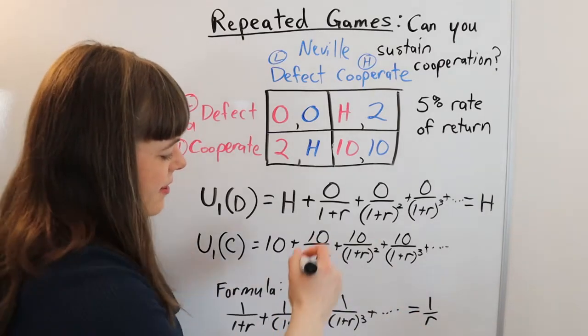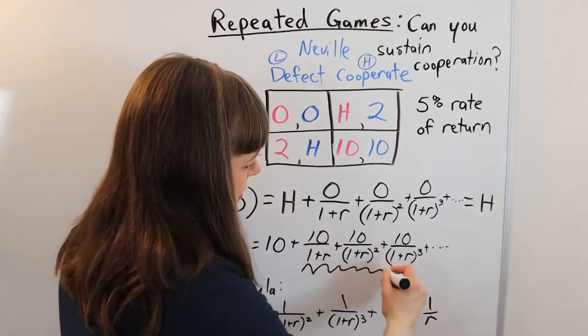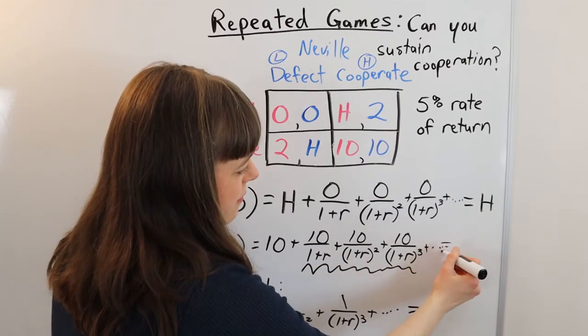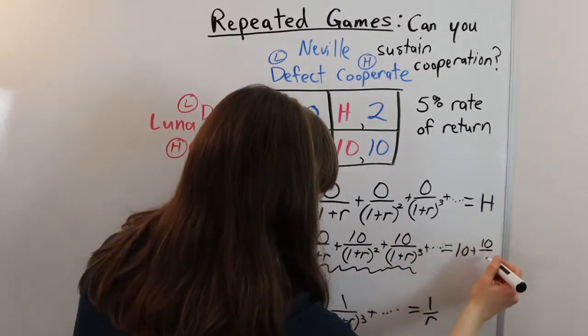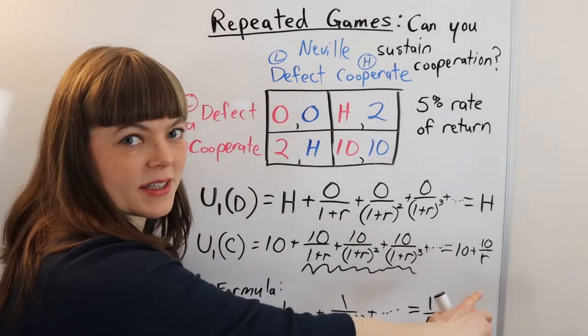So we noticed that actually this sort of matches that formula. So we can solve for this and it's going to give us 10 over 10 plus r.